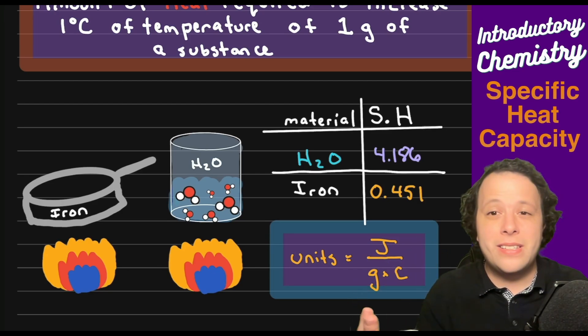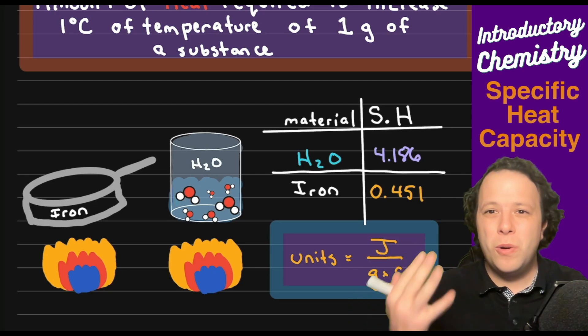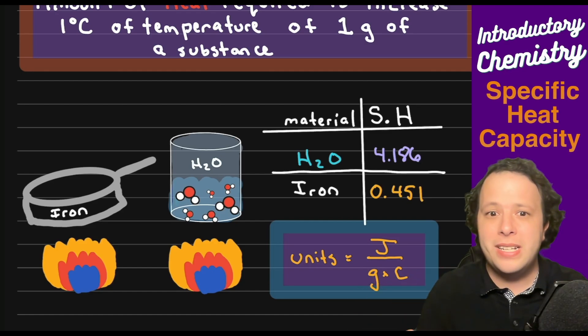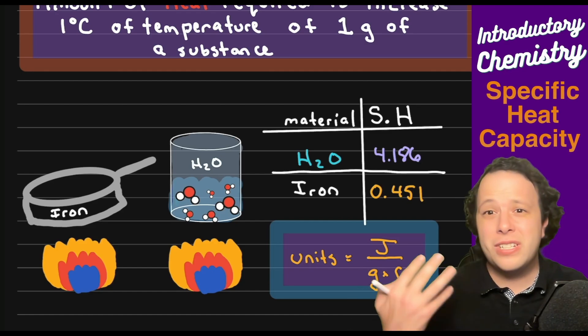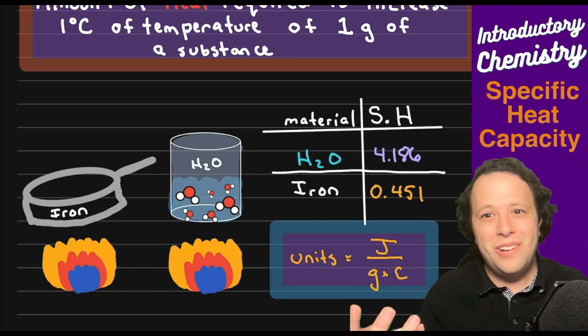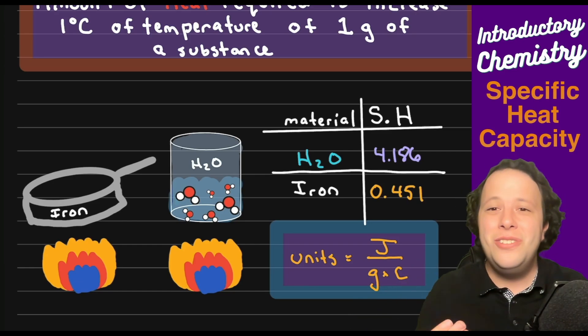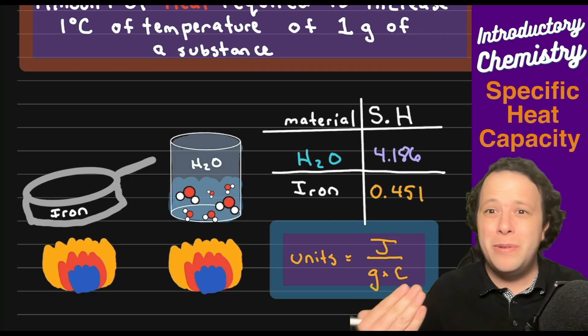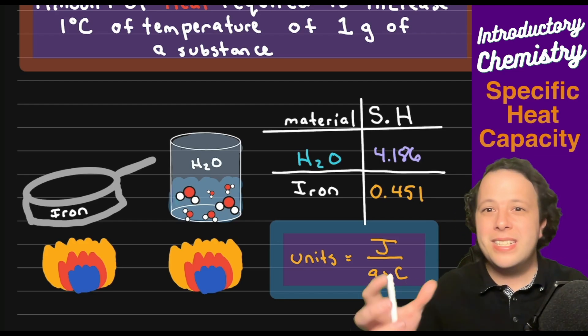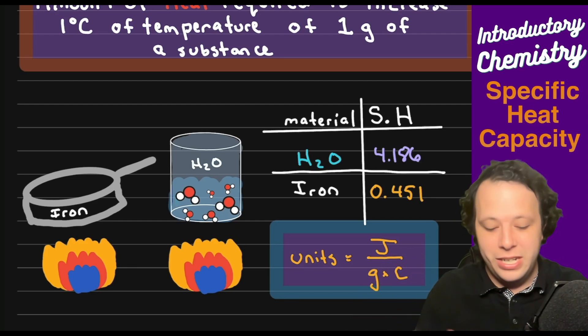One way to think about this is if you put water on the stove to make pasta or rice or you're just trying to boil it, you'll realize this is taking so long. It usually can take anywhere from five to maybe 15 minutes depending on your stove. It takes a very long time for that to boil and that's because it's absorbing all that energy from the fire in order to eventually reach boiling.